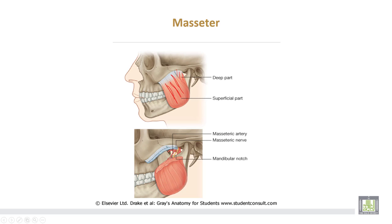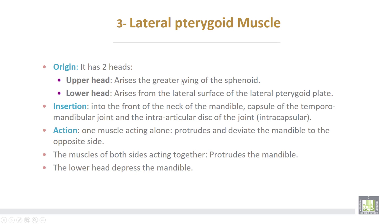The lateral pterygoid muscle has two heads. The upper head arises from the greater wing of the sphenoid, while the lower head arises from the lateral surface of the lateral pterygoid plate. Insertion is into the front of the neck of the mandible, the capsule of the temporomandibular joint, and the intra-articular disc of the temporomandibular joint.